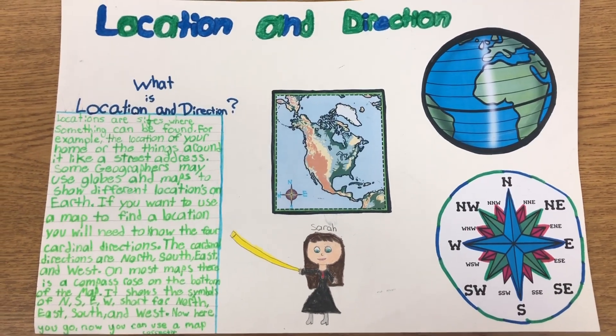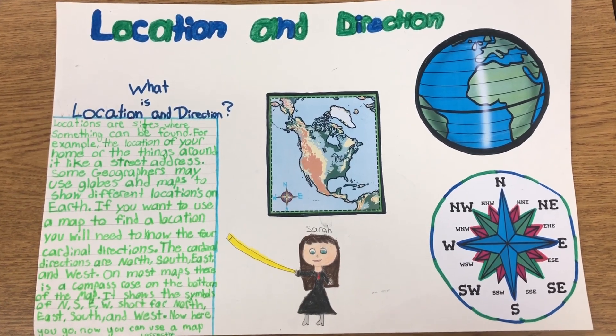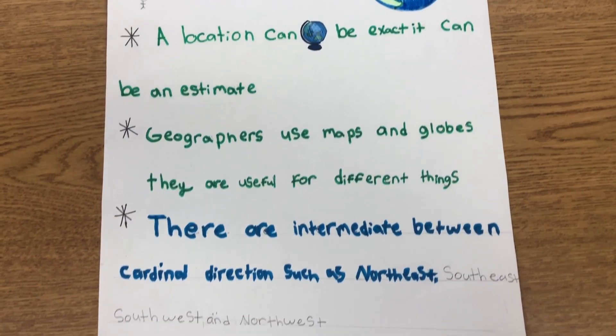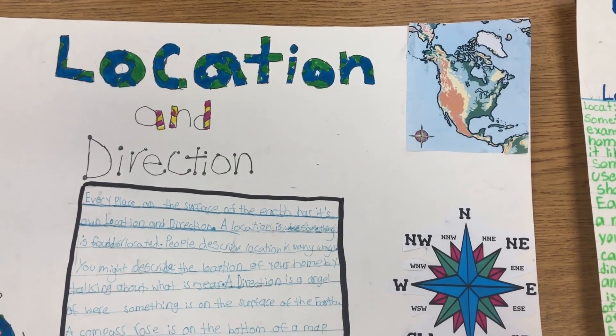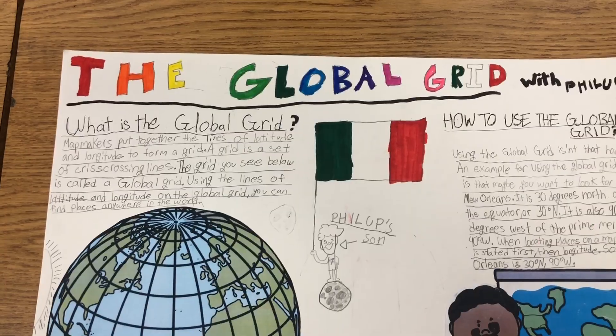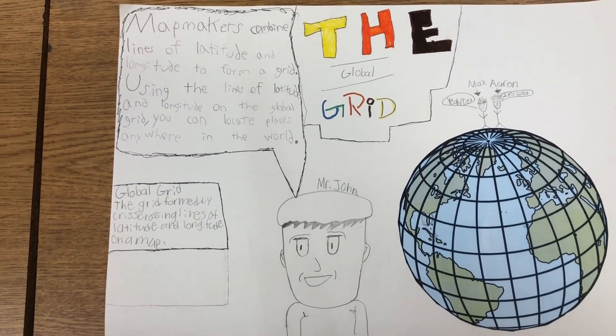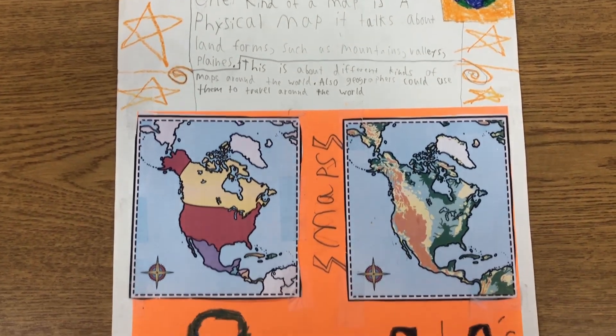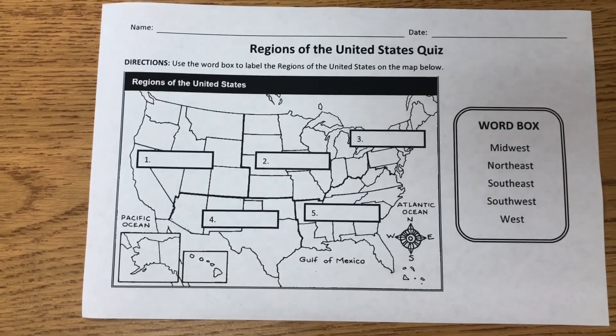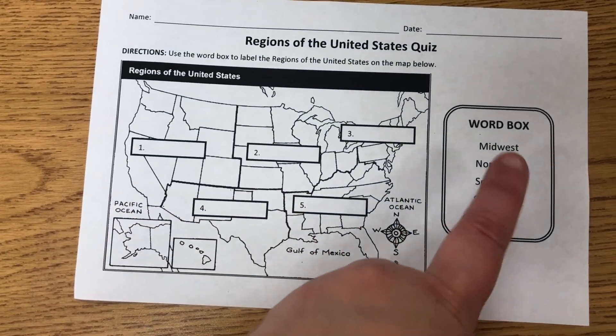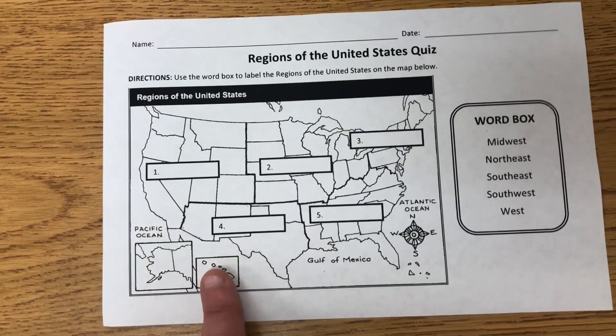Three different teams worked on location and direction, so there were three posters showing that information. Two groups worked on the global grid. The last group presented on the different kinds of maps. That's pretty much what we did for most of social studies today. Since Wednesday doesn't give us time for social studies, I also reviewed the regions of the United States and gave a little pop quiz — just a US map where students used a word box to identify the different regions.